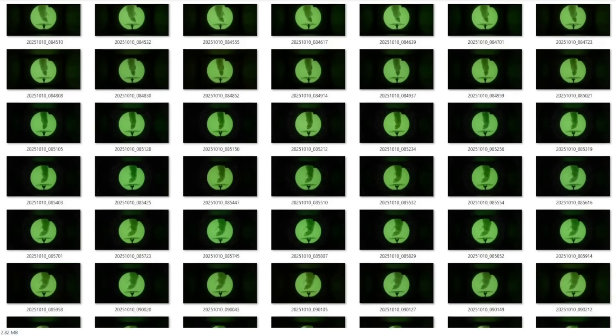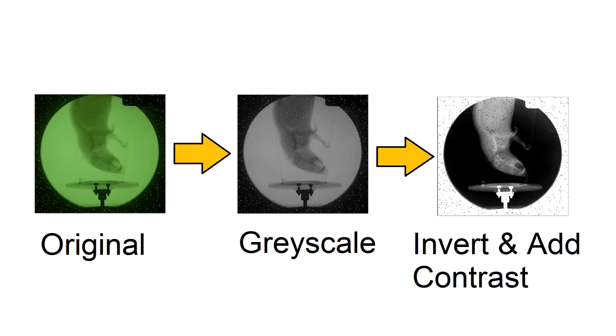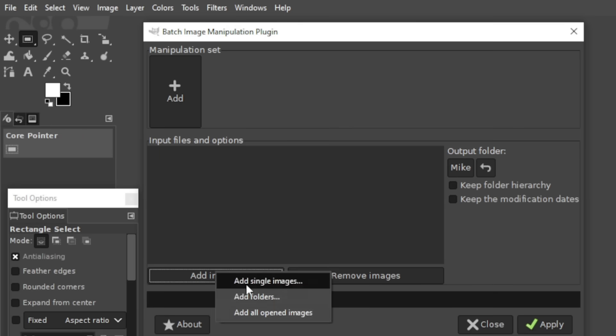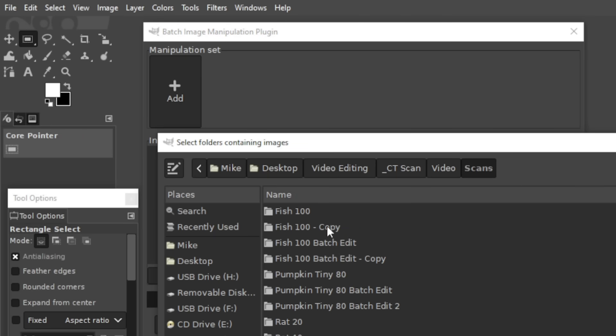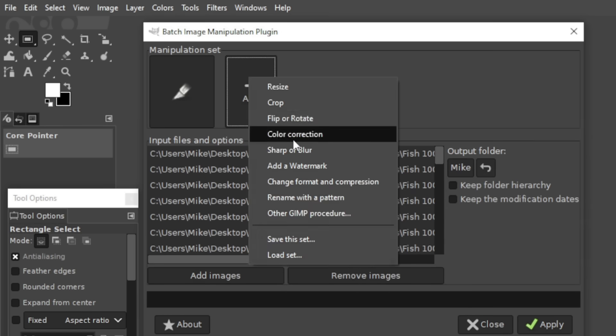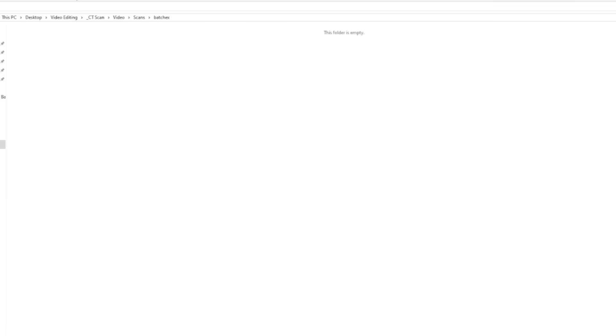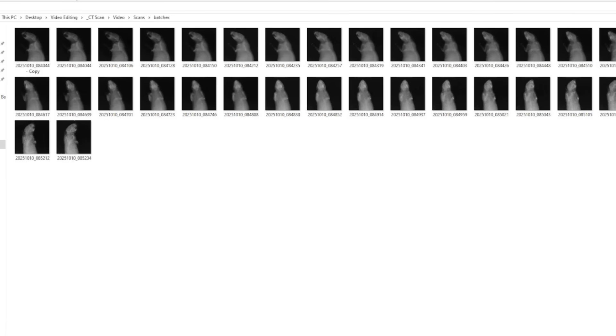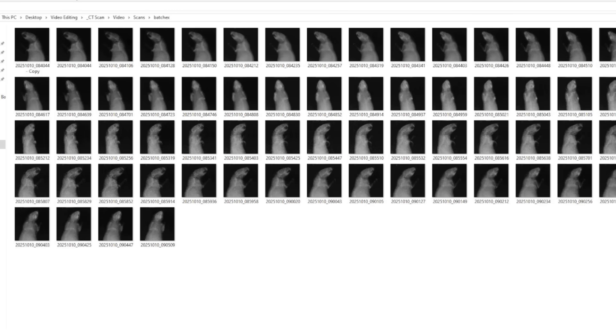Before these can be loaded into CT software, they need to be converted to grayscale, color inverted, and the brightness, contrast, and sharpness need to be touched up a little bit. That's a bit of a process in and of itself, so if you're interested in knowing how to do that, I've provided a link in the description that shows how you can do it with GIMP. So after a bunch of tedious and annoying button pressing, we've got a nice set of grayscale images that are ready for use.